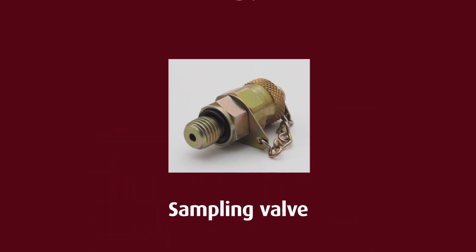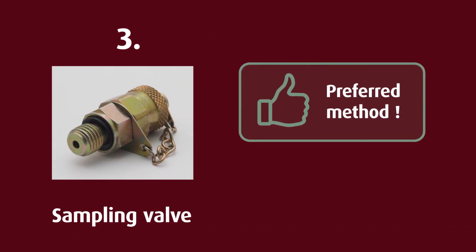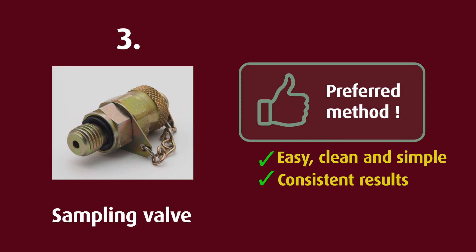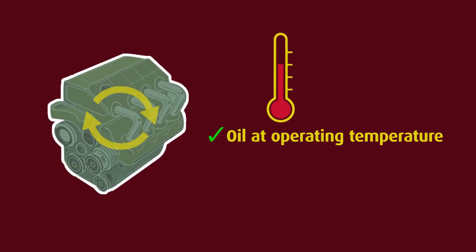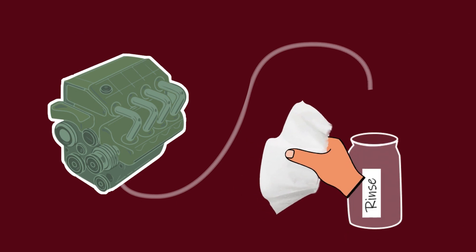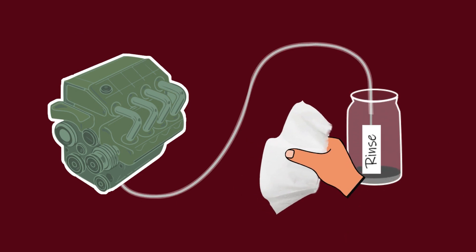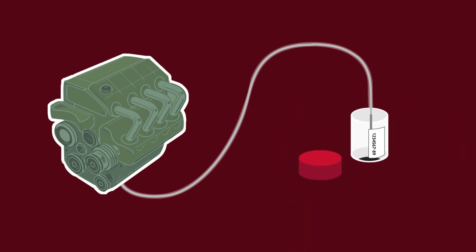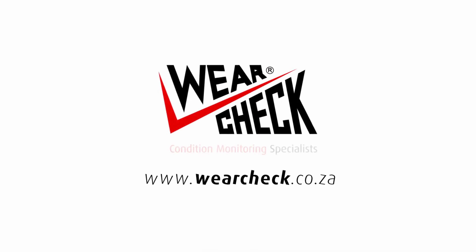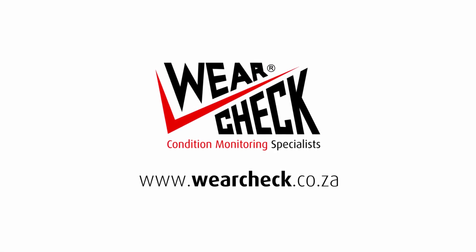Sampling valve: the sample valve is the most reliable method for taking a sample. It is easy, clean, and simple, and provides consistent and representative results, as the machine has to be running for the valve to work and the sample will always be taken from the same location. Make sure that the oil is at operating temperature to ensure it is well mixed. Remove the dust cover, clean the valve orifice, and attach the connector. Allow a few milliliters of oil to drain into the rinse bottle in order to purge the sampling tube. Disconnect the rinse bottle and attach the sample bottle. Fill the sample bottle to about the ¾ level. We hope this has been helpful — if you have any questions, please do not hesitate to contact us.